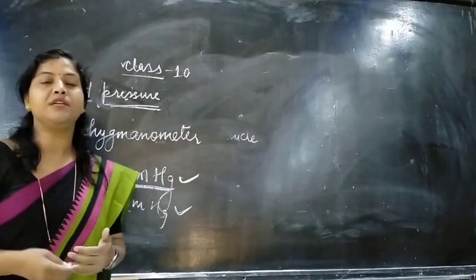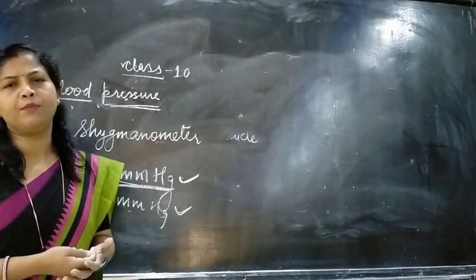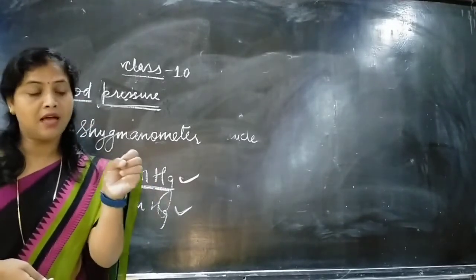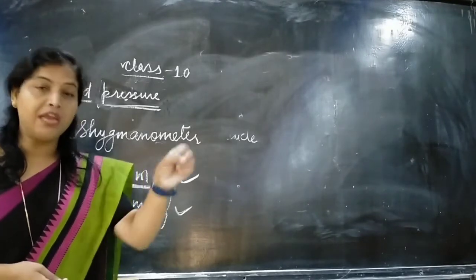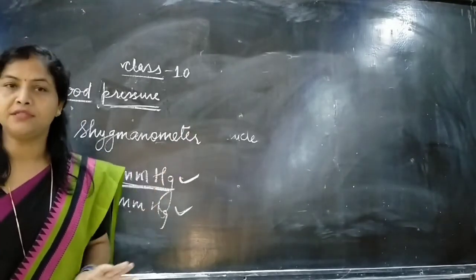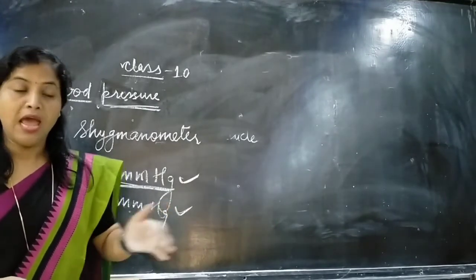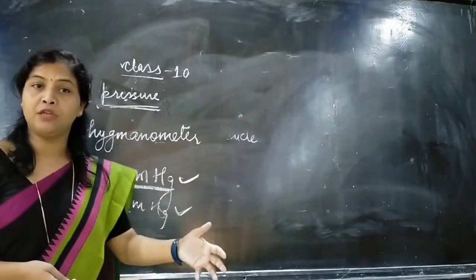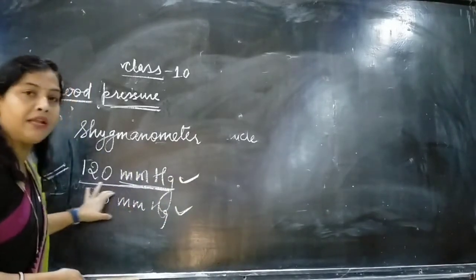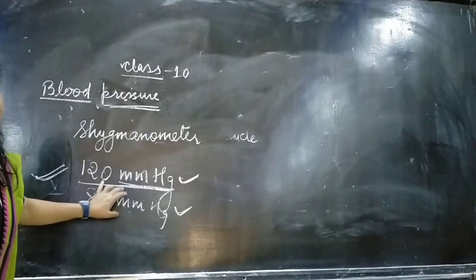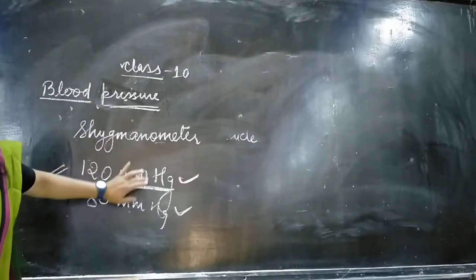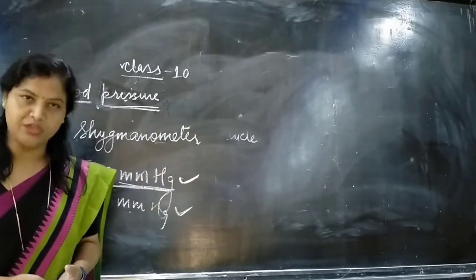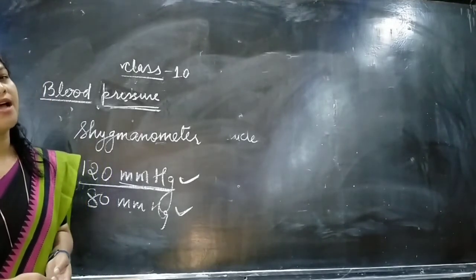Why does blood pressure increase? There may be different reasons, but mostly when the blood vessels are constricted, blood is pushed with greater pressure to the arteries, so it needs more pressure. Because of that, the blood exerts more and more pressure on the artery walls, the measurement increases and goes to the higher side — this is called high blood pressure.